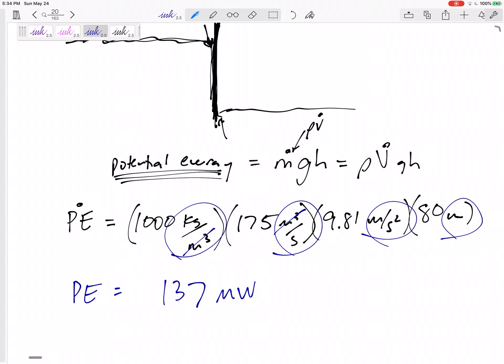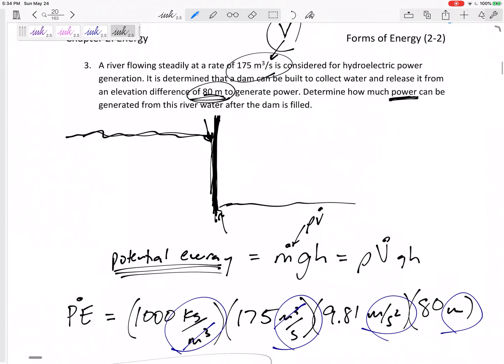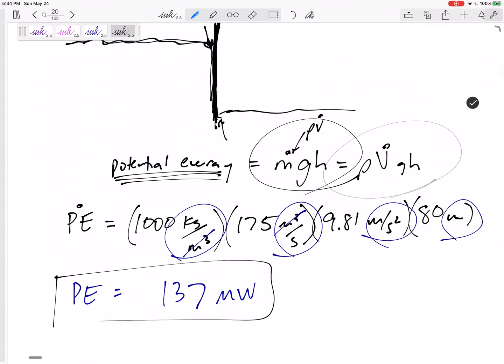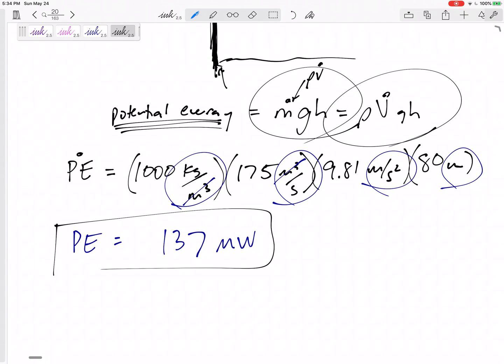So problems like this, first you got to figure out what it's really asking for. It's asking me for m dot g h. M dot g h is rho V dot g h, then we go right there. Very large number, but divide it by 10 to the 6 to convert from watts to megawatts.